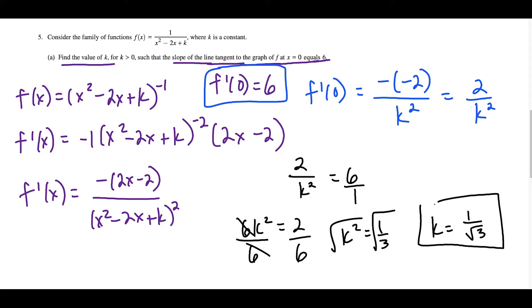This is our final answer. Some people prefer to rationalize the denominator — you could multiply the top and bottom by square root 3 over square root 3, and say that k is equal to square root 3 over 3. But that's not a necessary step; this answer is fine.